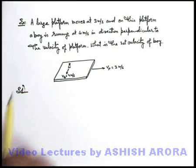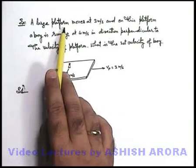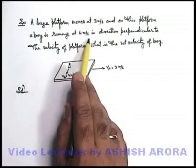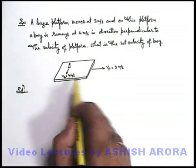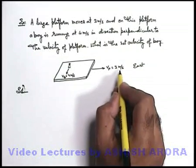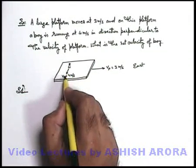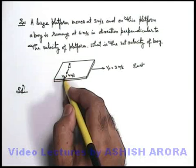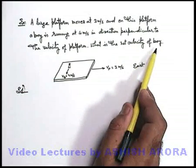Let's take up an example to understand addition of vectors. We are given a large platform which moves at three meters per second, and on this platform a boy is running at four meters per second in a direction perpendicular to the velocity of the platform. The platform moves toward east at three meters per second, and the boy on the platform starts running toward south at four meters per second. We are required to find the net velocity of the boy.